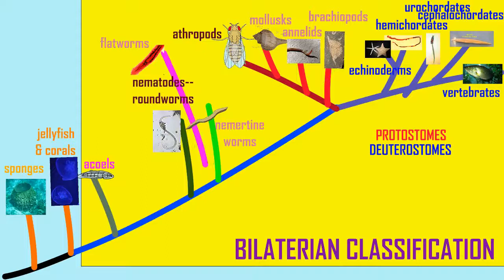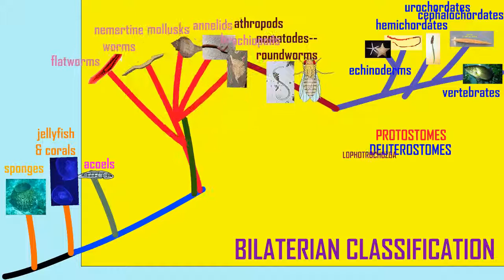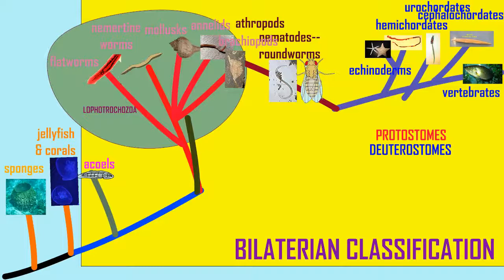Meanwhile, a number of phyla were classified together in a new group, Lophotrochozoa, which includes mollusks, brachiopods, and bryozoans, the flatworms (platyhelminthes), and the annelids, or segmented worms. This is the sister group of another new clade,